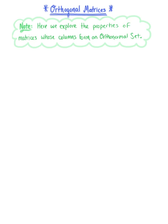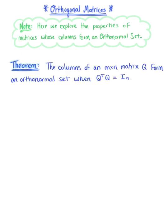Here we begin to explore matrices whose columns form an orthonormal set. The first thing we need to do is look at this theorem, which says that the columns of an n by n matrix Q form an orthonormal set when the product of the transpose of matrix Q with matrix Q is equal to the n by n identity matrix.